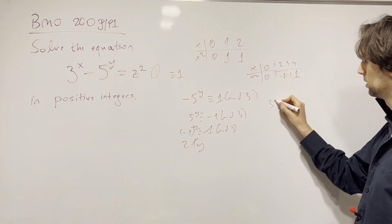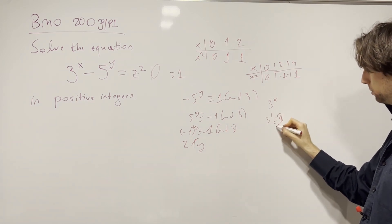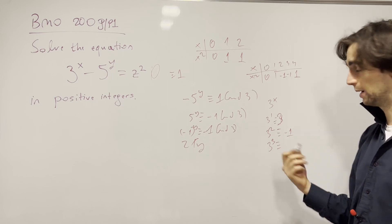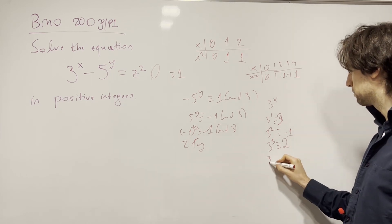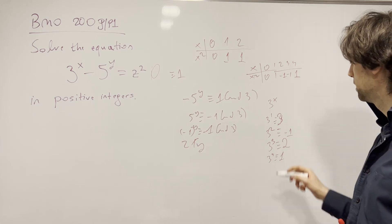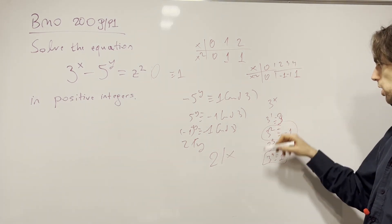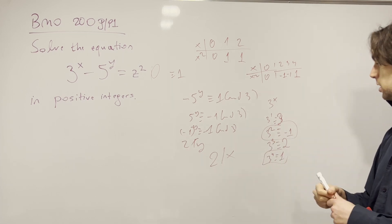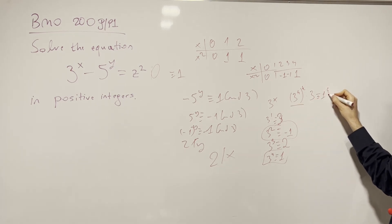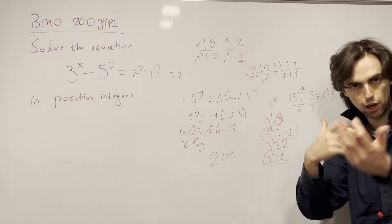Now let's look at the remainders of 3^x modulo 5. We get: 3^1 ≡ 3, 3^2 = 9 ≡ −1, 3^3 ≡ −3 ≡ 2, and 3^4 = 81 ≡ 1 modulo 5. This is periodic with period 4, which we can verify by noting 3^(4k+1) = (3^4)^k · 3 ≡ 1^k · 3 ≡ 3 mod 5. From this, we conclude that 2 divides x.